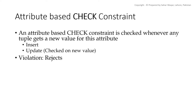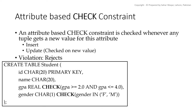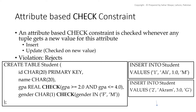We can also add constraints on attributes using the keyword CHECK. It is usually used when we have more complex constraints, such as adding limits or a range to an attribute value, character checking, and arithmetic checks. Basically, whatever you can write in a WHERE clause in SQL can be used with the CHECK keyword. You can even write subqueries inside CHECK. Attribute level check constraints are checked with any change in the attribute value, and if a change does not satisfy the constraint, the DBMS rejects it.